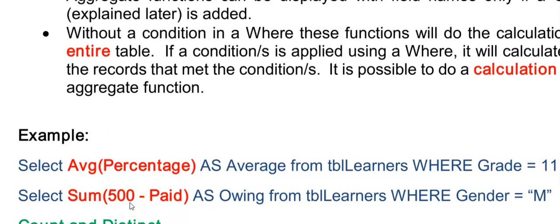So it is calculating the total amount owing, displaying it as an owing field from the table learners, but only of the male learners, because I've added a WHERE where the gender is equal to M.